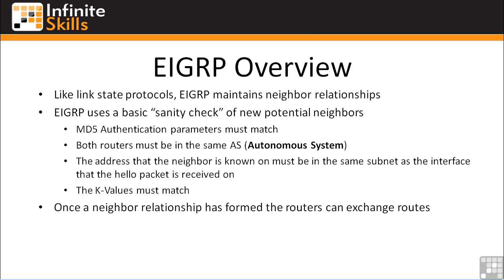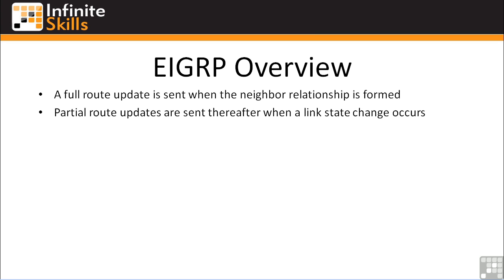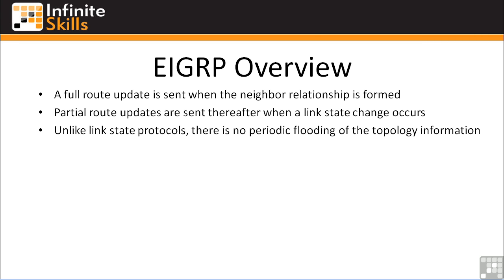Once an EIGRP neighbor relationship has formed, the routers can start exchanging routes. A full route update is sent when the neighbor relationship is first formed — here's my entire routing table, everything you need to know about me. Partial route updates are sent thereafter when a link state change occurs, similar to link state routing protocols. However, unlike link state protocols, there's no periodic flooding of topology information across all routers. If you miss a link state update from EIGRP, you better hope you've got another path to that network, because you're not going to get it again 30 minutes later. It's important to remember that EIGRP does not flood topology packets again once a neighbor relationship is established.